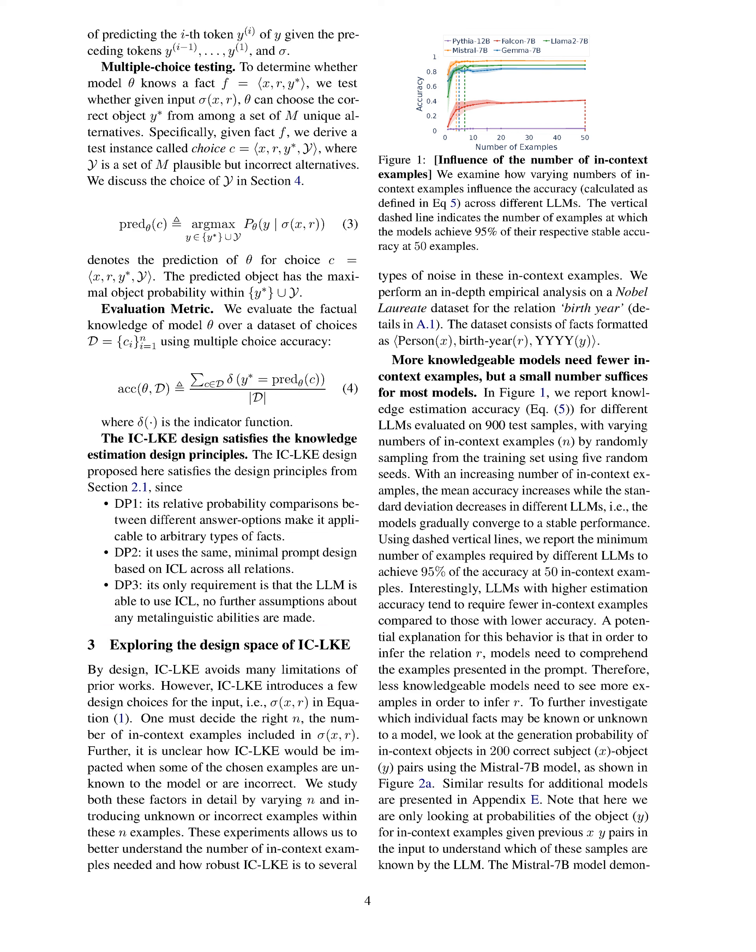In this section, we address the knowledge estimation problem by determining which facts a language model knows. We introduce a latent knowledge estimator that assesses whether the model knows a given fact, aiming for high recall of true facts while maintaining precision by not recalling false facts. Leveraging in-context learning, we construct prompts that communicate information about relations without introducing side channels or relying on metalinguistic abilities, ultimately evaluating the model's factual knowledge through multiple choice testing.